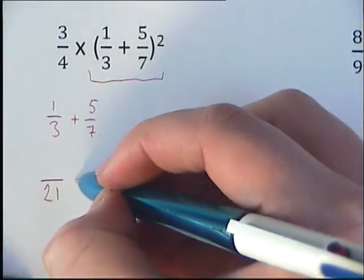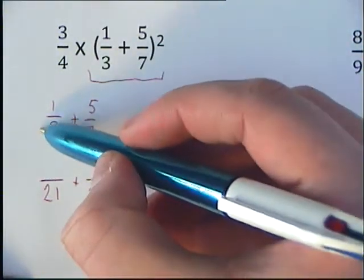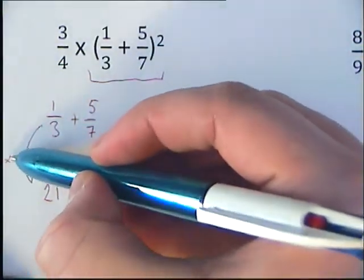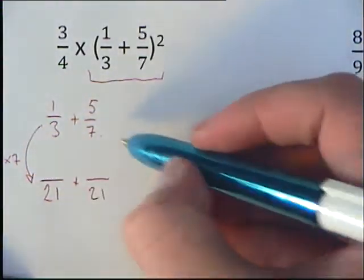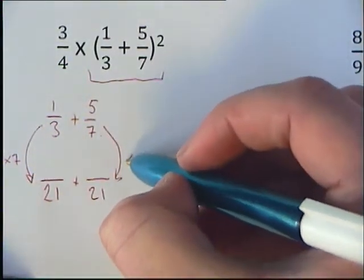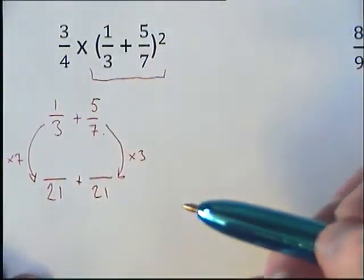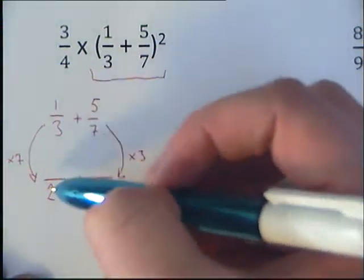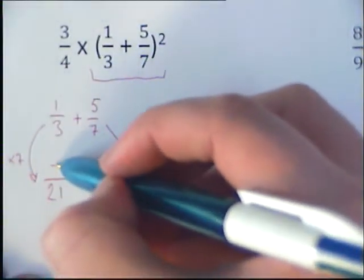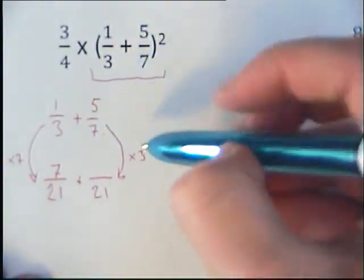We had to times our 3 by 7 to get to 21. We had to times our 7 by 3 to get to 21. So 3 times 7 is 21, so now we need to times the top number. 7 times 1 is 7, 5 times 3 is 15.